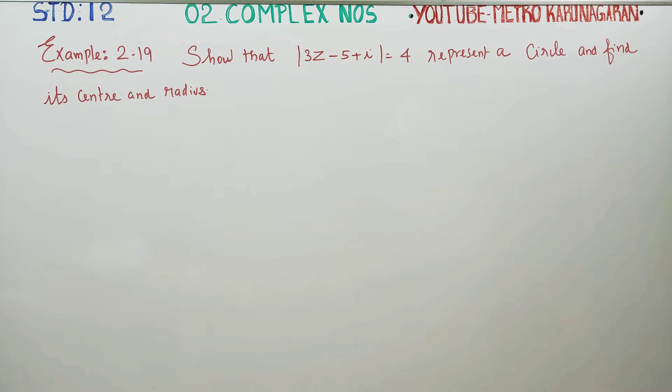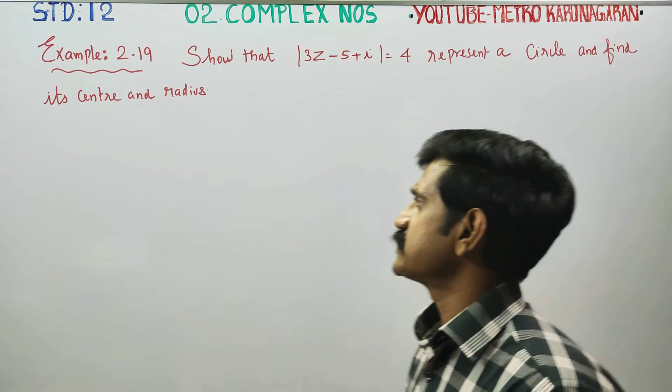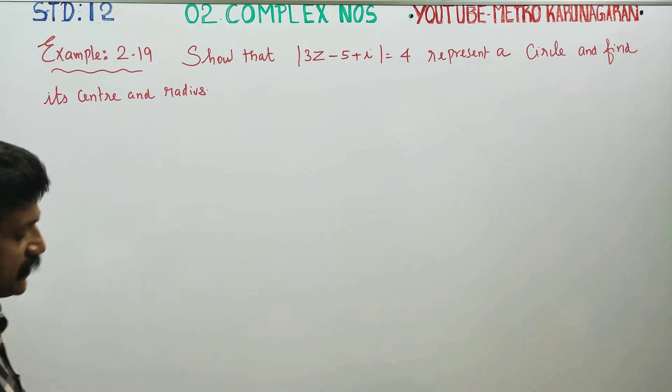Dear 12 standard students, I am Etro Karanagaran. In example 2.19 complex number, you have to show that it represents a circle and you have to find its center and radius.